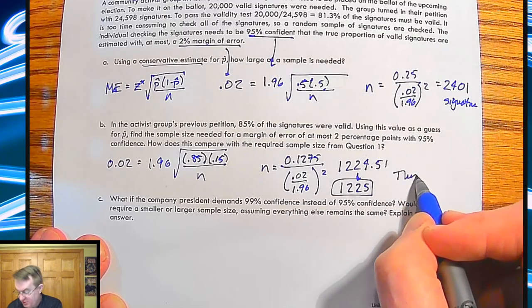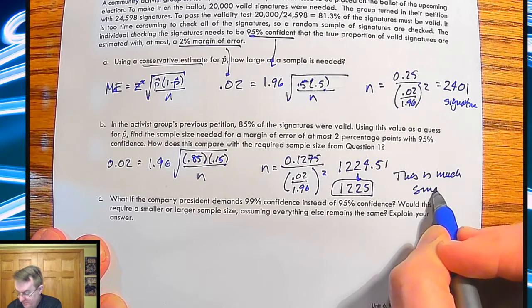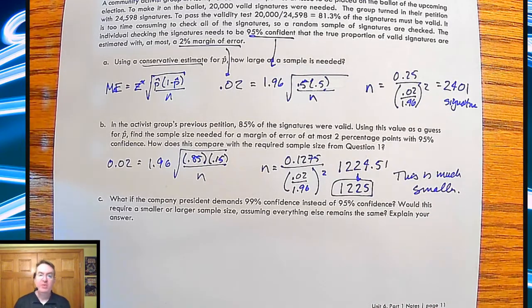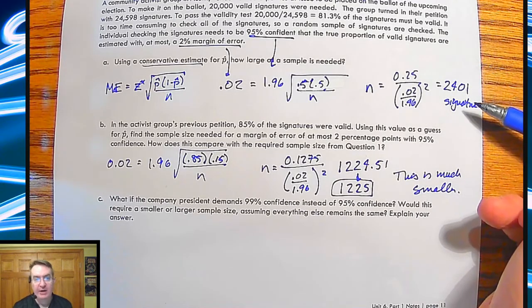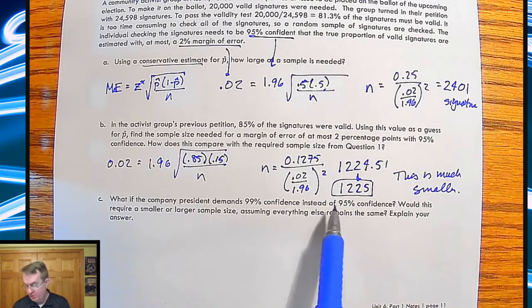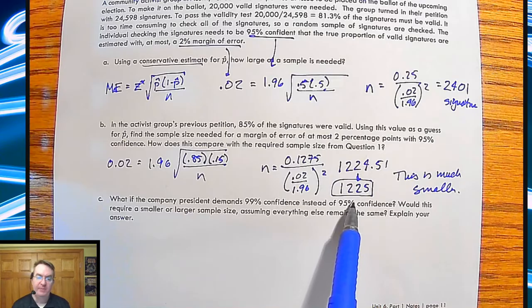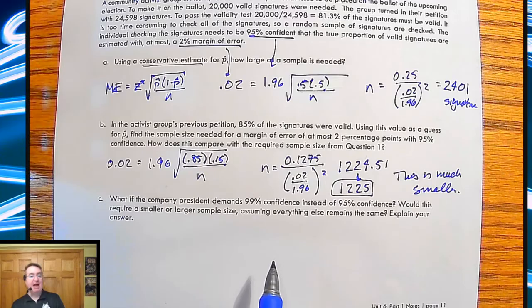Now notice this is much smaller. But we knew that. We knew that was going to be the case because we said this is the most conservative. We want to double check. We're going to go check 2,401 signatures. If we kind of know what's going on, we do 1,225. Now, what if the company present demands a 99% confidence interval instead of a 95% confidence interval? Would you require a smaller or larger sample size, assuming everything else remains the same? Explain your answer.